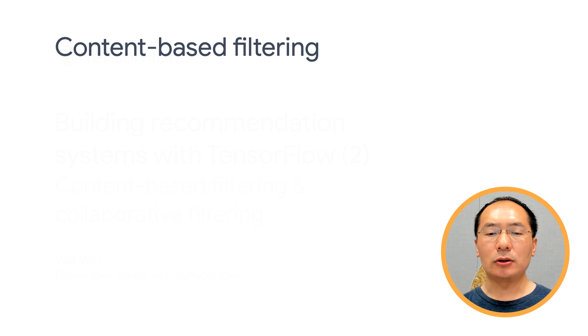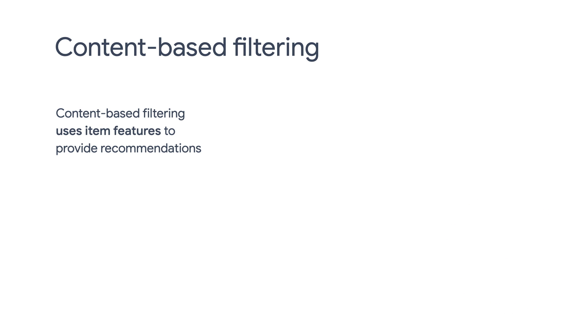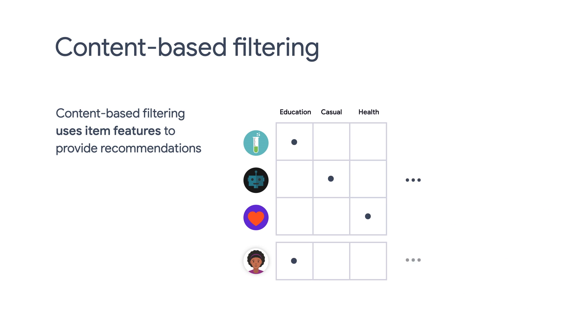There are many traditional approaches used to build recommendation systems. One common approach is content-based filtering. Content-based filtering uses item features to recommend other items similar to what a user likes, based on previous actions or explicit feedback. For example, here we're illustrating four apps that have different features. Each row represents an app, and each column represents a feature. Some apps are educational or science-related. Some are relevant to health or healthcare. Some are simply time wasters. When a user installs a health app, we can recommend other health-related apps to that user, because they are similar to the installed health app.